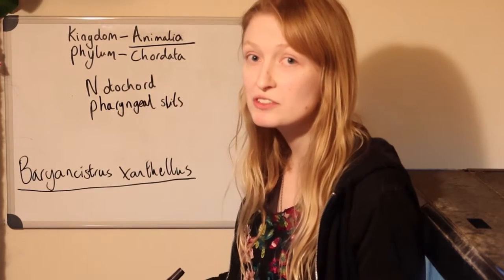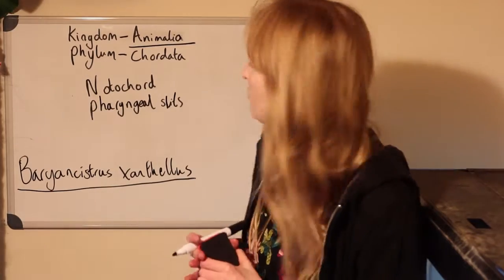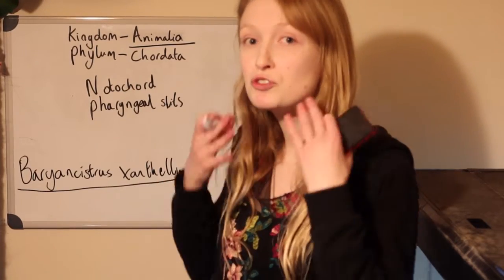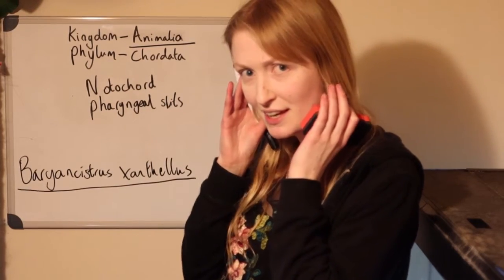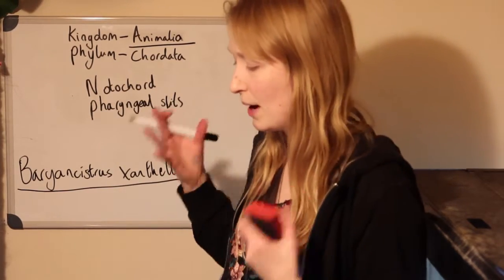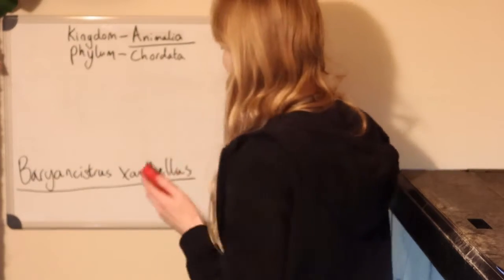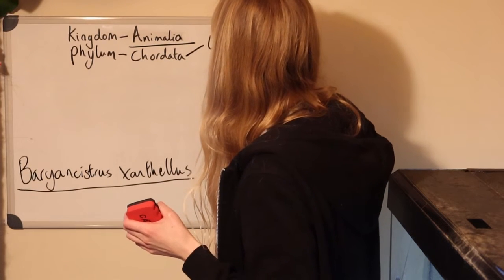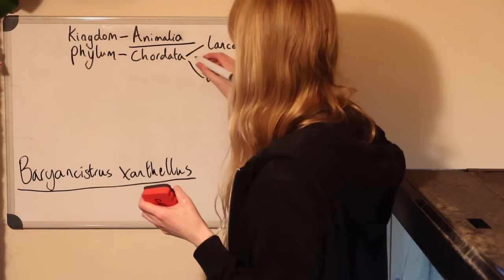Pharyngeal slits generally form a lot of structures — they form the jaws of gnathostomes, which are jawed fishes, and they form the ear bones of mammals. Chordata includes lancelets, vertebrates, and sea squirts. There are other phyla in Kingdom Animalia, and the closest related to the chordates is the Echinodermata, which includes your starfishes, sea cucumbers, and similar things. It's quite debatable what is closer to vertebrates — lancelets or sea squirts. Vertebrates are anything with a backbone.